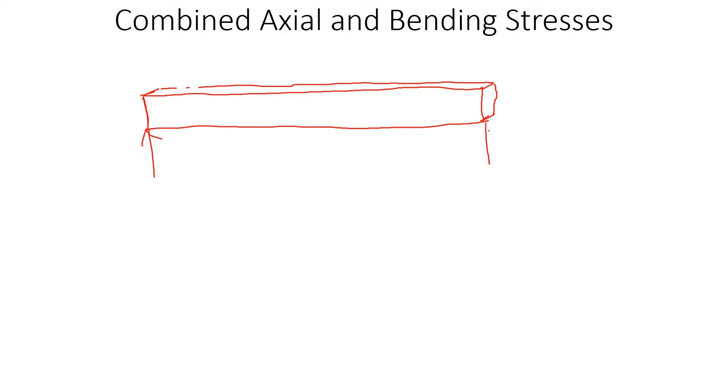Assume that this is a simply supported beam and we are applying load from here. Now it could happen that there is a load also acting axially. So that's another load acting axially, P_A. Let's say this is bending load P_B.